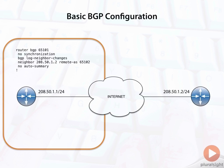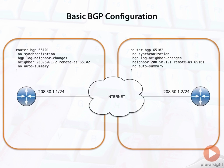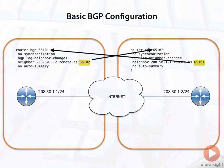Let's go over to the other side — router BGP 65102, that's the Autonomous System. And then when I define the neighbor here, 208.50.1.1 is in Remote AS 65101. So you can see how the Autonomous System numbers in the neighbor statement point to the remote Autonomous System on the other side.